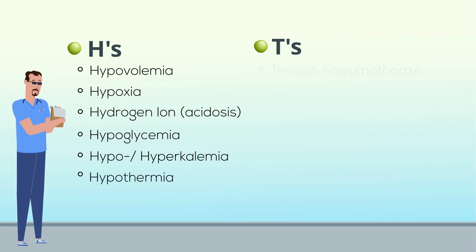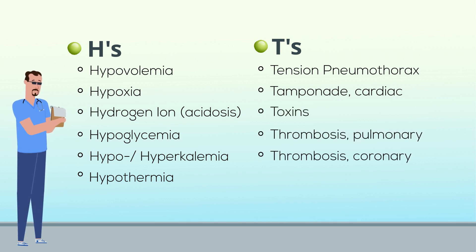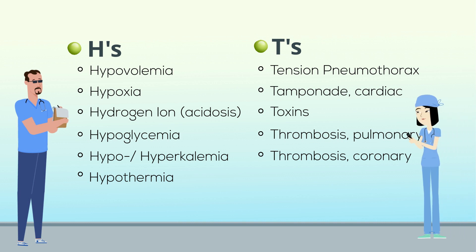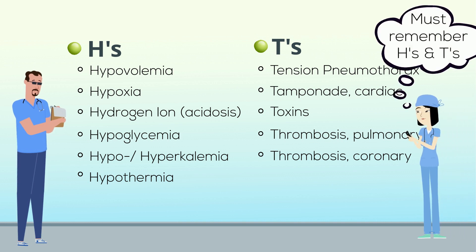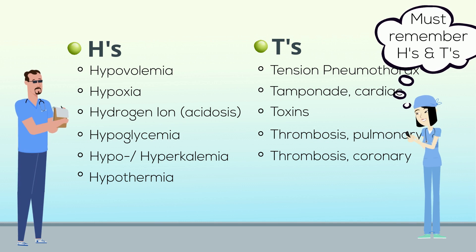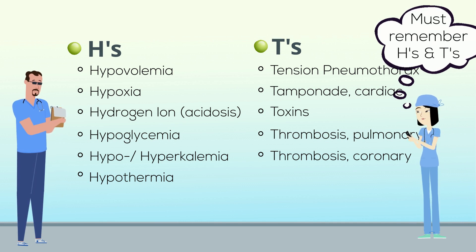The T's are tension pneumothorax, cardiac tamponade — there they go again getting creative — toxins, and thrombosis, either pulmonary or coronary. I'm a little partial to the H's over the T's when it comes to likely underlying causes in a neonate, but each clinical situation is different and you're going to have to think it through carefully each time.